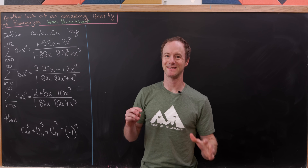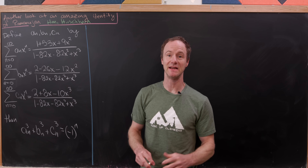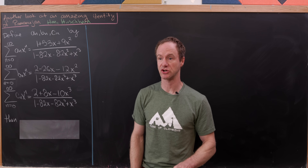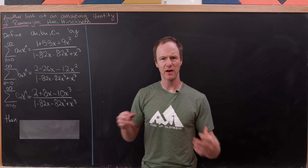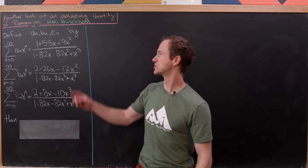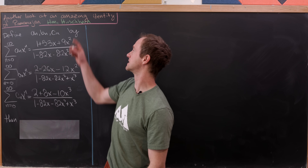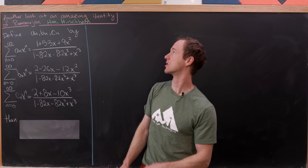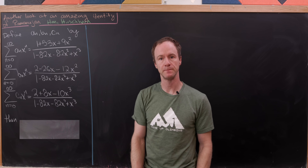Today we're going to prove an astounding identity that is due to Ramanujan, and we're going to follow the strategy from this paper by Hahn and Hirshhorn.